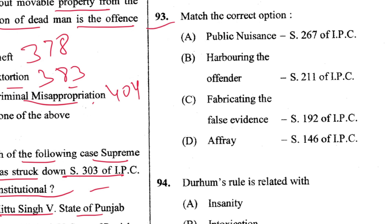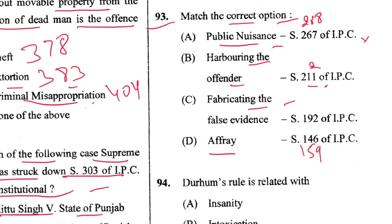Question 93: Match the correct option. Public nuisance is Section 268 — incorrect in the option. Harbouring the offender is Section 212 — incorrect. Fabricating false evidence is Section 192 — correct. Affray is Section 159, not 146 (rioting). Which is correct? C is the answer.